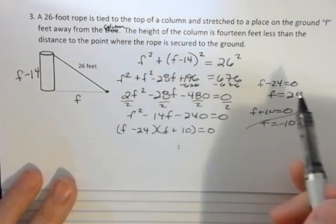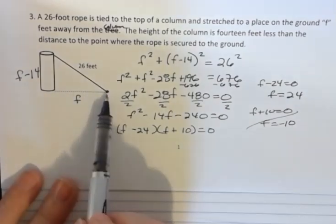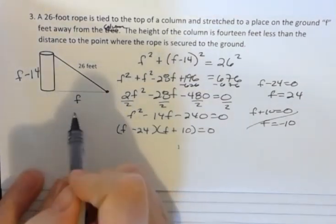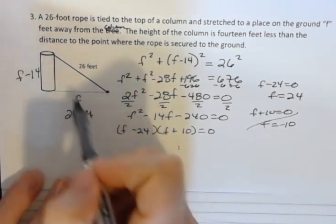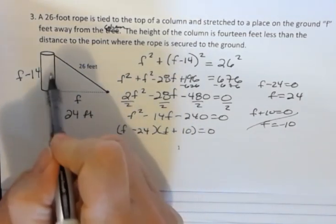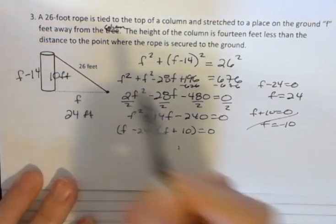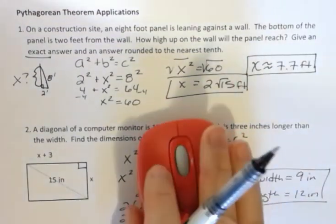So it depends on what they asked. If they asked you what this distance was, the distance to the end of the thing, we know that that's 24 feet. If they ask you the height of the column, 24 minus 14 would be 10 feet. So whichever question they ask on that was what you would answer. All right, have a fantastic day and we'll see you next time.